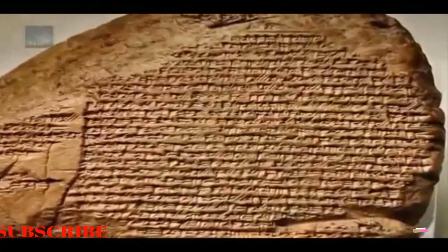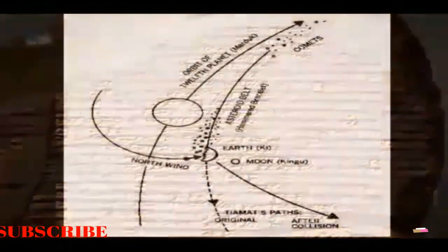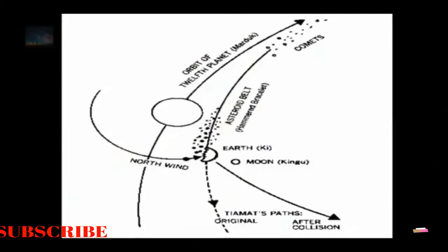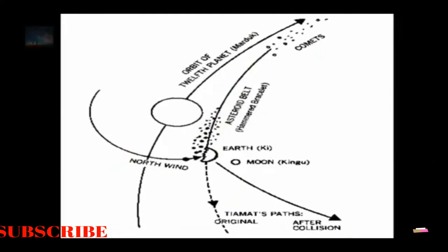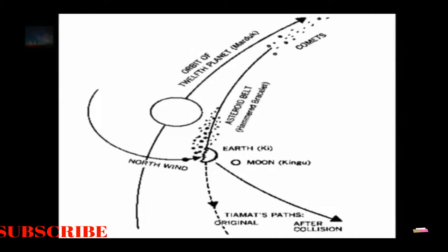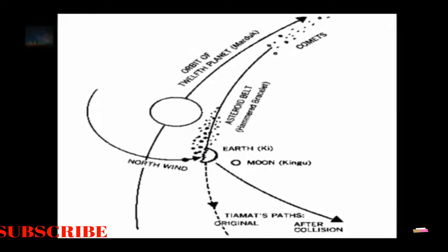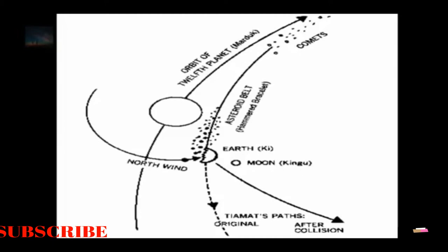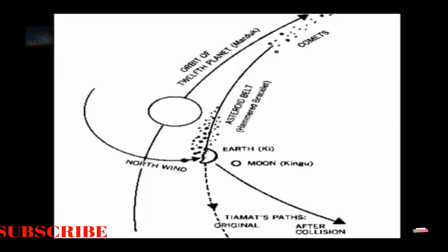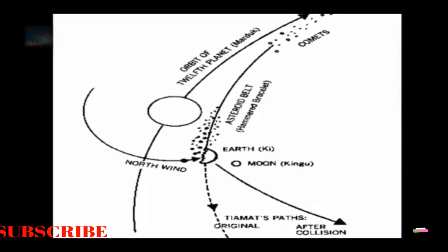The planet Nibiru, as it came into the solar system on its clockwise retrograde elliptical course, struck Tiamat which was moving in its ordained counterclockwise orbit. According to Sitchin's well-known translations, one of Nibiru's satellites struck Tiamat first, followed by two more of its moons. Nibiru then itself, an enormous cosmic entity, struck Tiamat, smashing one half of the planet into pieces.